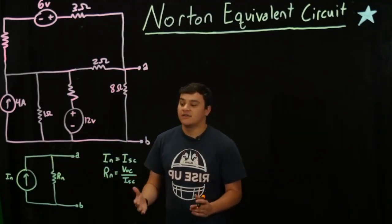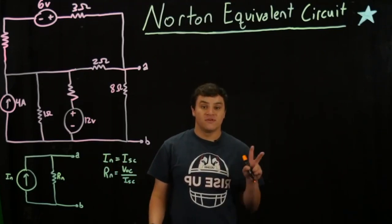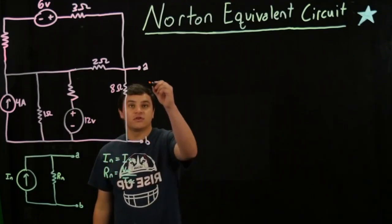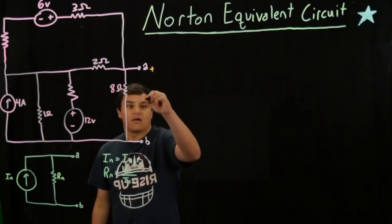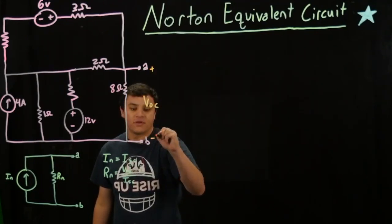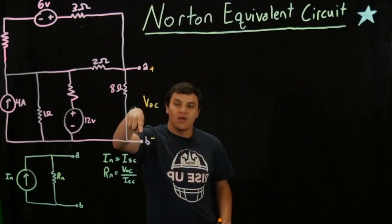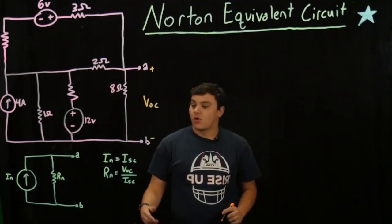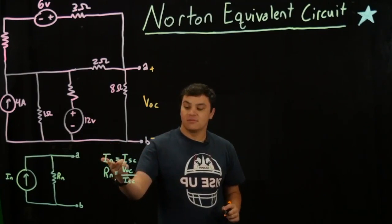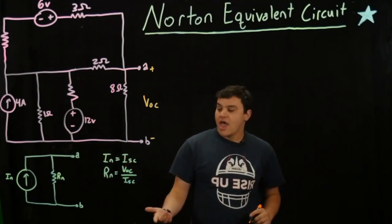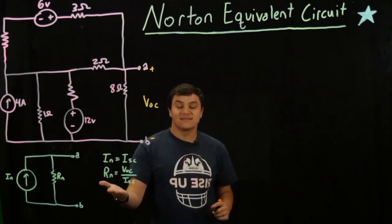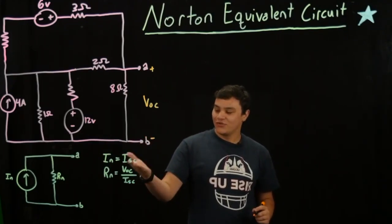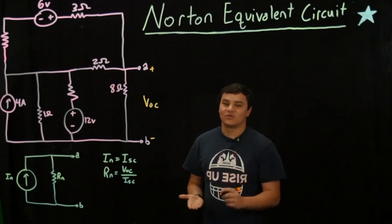To get these values for the current source and the resistor, we're going to perform two tests. The first test is an open circuit test, where we find the voltage across A to B — the open circuit voltage. Then we short A to B and find the current flowing through there — the short circuit current. Our Norton current equals that short circuit current, and our Norton resistance equals the open circuit voltage divided by the short circuit current.